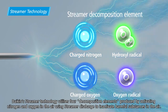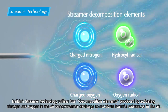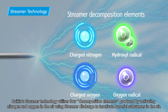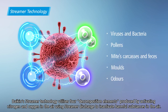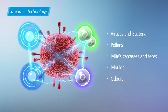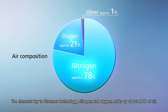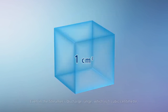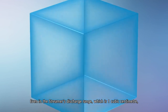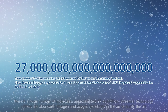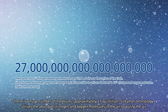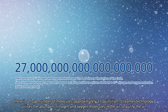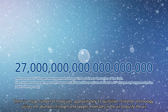Daikin's streamer technology utilizes four decomposition elements produced by activating nitrogen and oxygen in the air using streamer discharge to inactivate harmful substances in the air. The elements key to streamer technology — nitrogen and oxygen — make up about 99% of air. Even in the streamer's discharge range of one cubic centimeter, there is a huge number of molecules, approximately 27 quintillion. Streamer technology utilizes these abundant nitrogen and oxygen molecules in the air to purify the air.